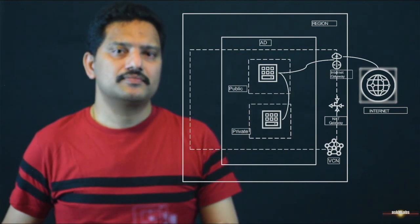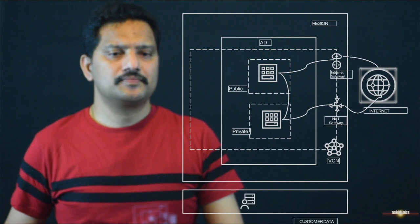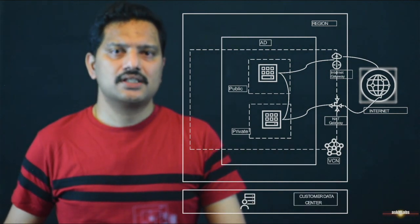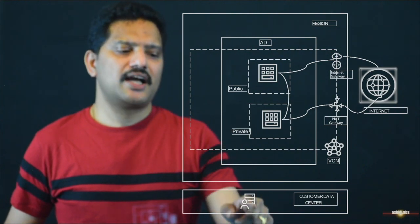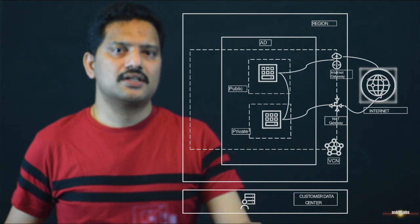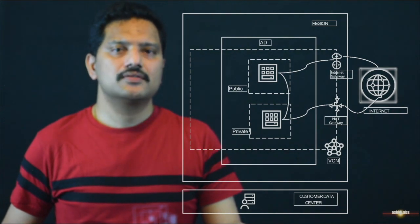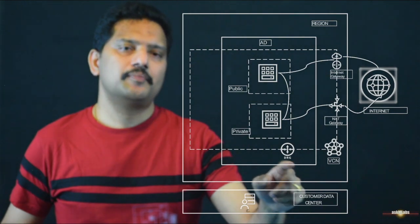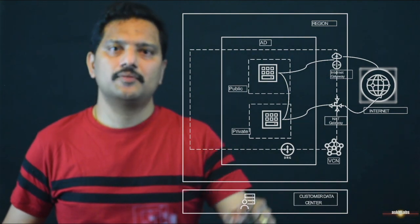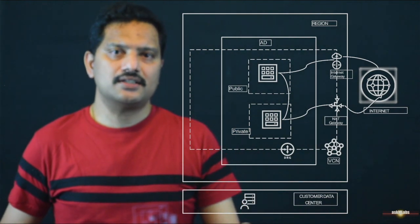We have public and private subnets. Now let's assume we have a client on-premises data center. How do we access from cloud to the client data center, or from the client to the cloud data center? There should be some way to access cloud resources from on-premises and vice versa. For this purpose, there is a different gateway called DRG — the Dynamic Routing Gateway. This DRG provides access for all cloud resources to reach the customer on-premises data center and also the other way around.